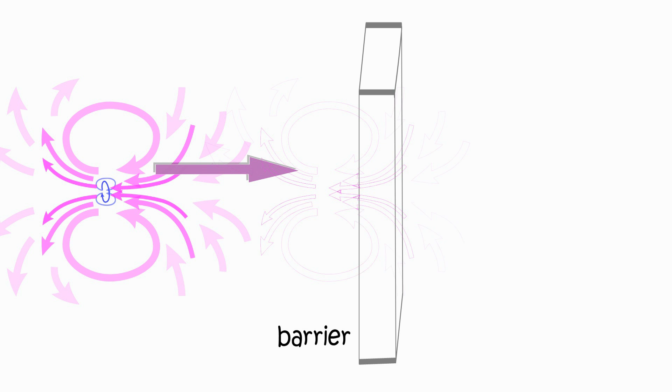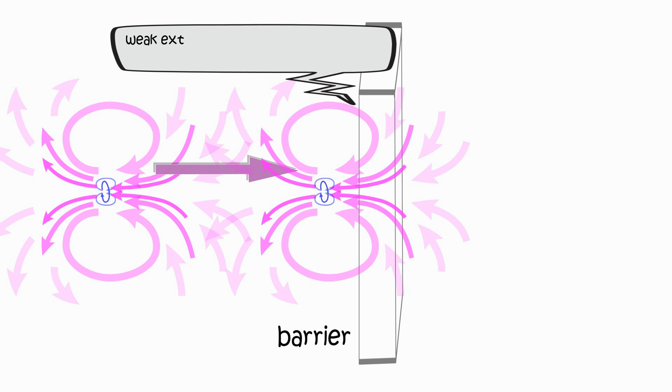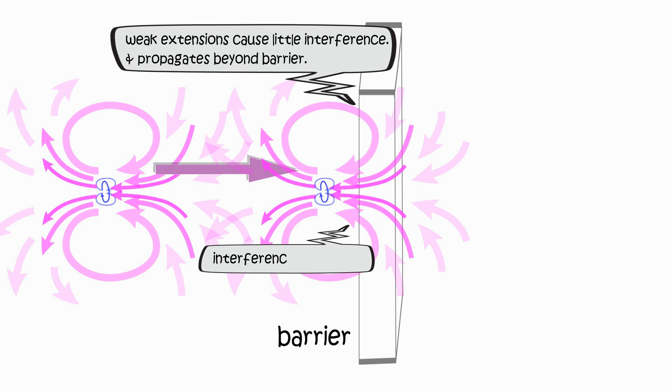Electron's outer extension can pass or transmit through the barrier to the opposite side. Usually electron bounces back when its dense inner extensions interfere with the barrier's electrons' inner extensions, because they do not want to disrupt their own configuration.